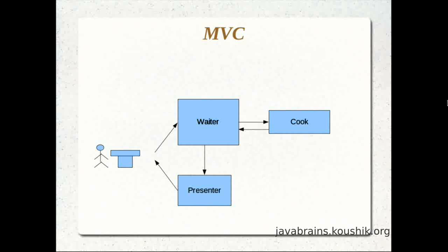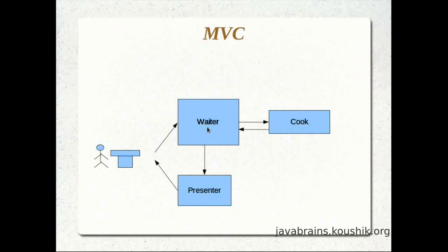Before mapping this to MVC, let's think about why we have these three different roles — the waiter, the cook, and the presenter. The advantage of having these separate roles is that there's no mixing of responsibilities; there is separation of concerns. The waiter doesn't have to know how to cook — all the waiter does is take orders and pass them on to the right cook. If there are three cooks each specializing in a particular type of dish, the waiter simply routes the order to the appropriate cook.